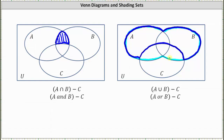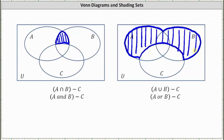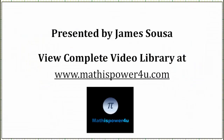Let's go ahead and erase the light blue and shade the dark blue. This region represents the set of elements that are in A or B which are not in C, meaning A union B minus C. I hope you found this helpful.